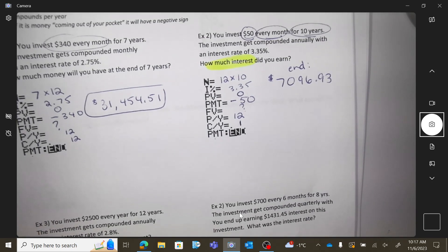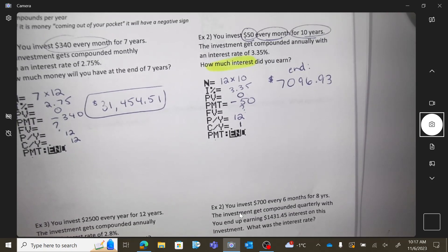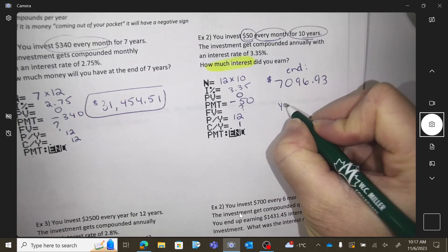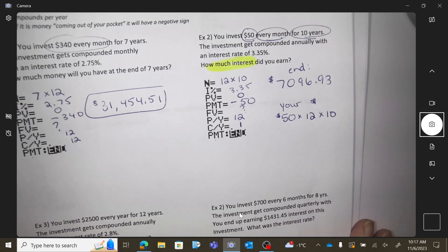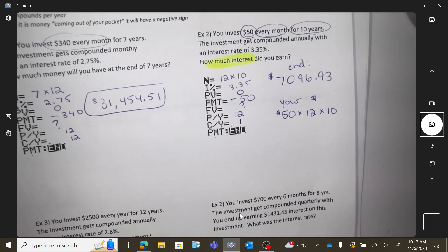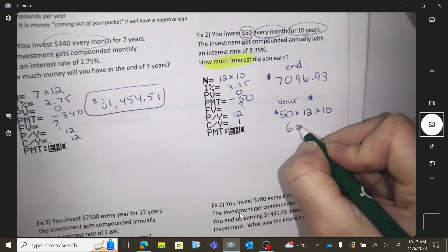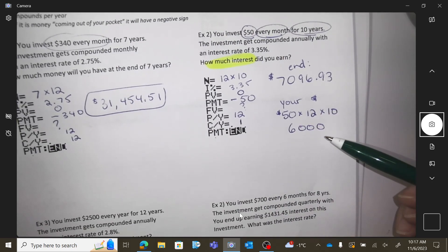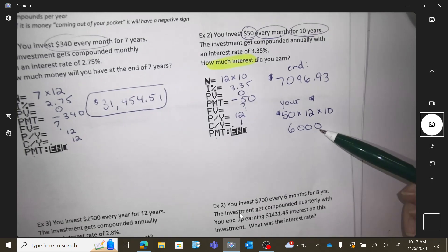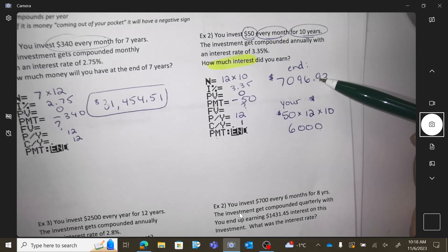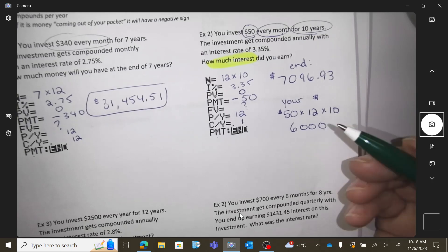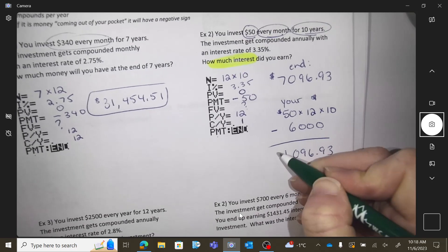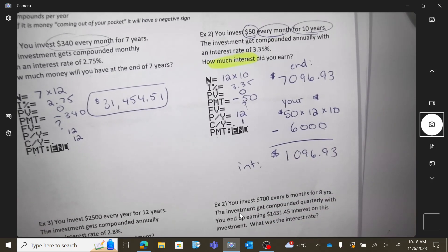So here's what we need to do. How much money have you put into this yourself? $50 every month for 10 years. So your money, $50 each month for 10 years. You did $50 every month for 10 years. It means you have put in $6,000 out of your pocket. But the bank account says this. So how much interest did I make? How much money has the bank contributed into my bank account? Subtract means $1,096.93. You're always thinking about how much money have I put out of my pocket.